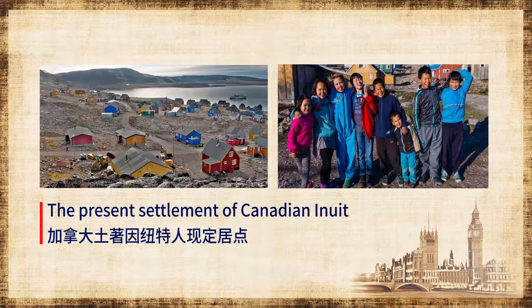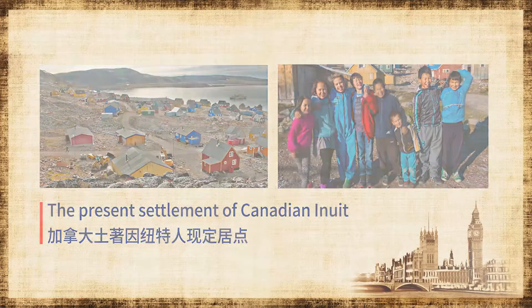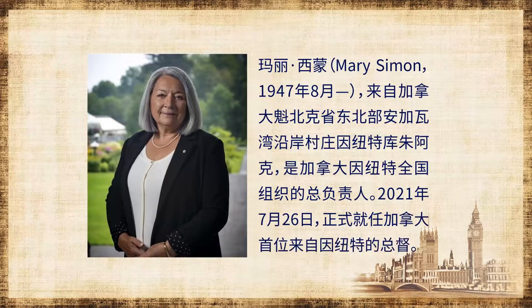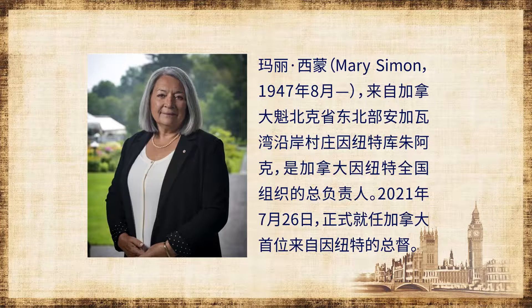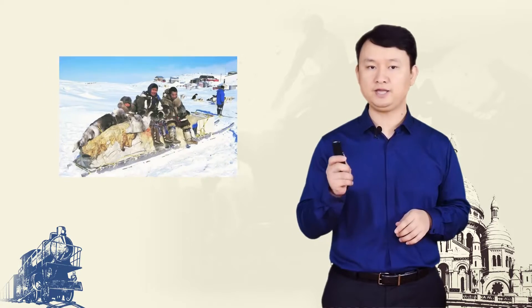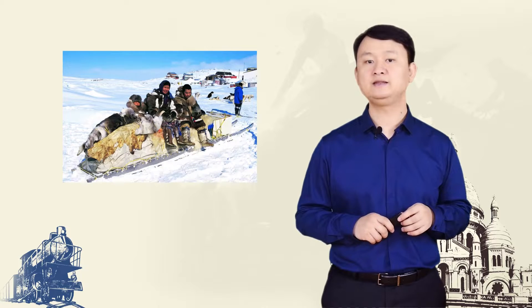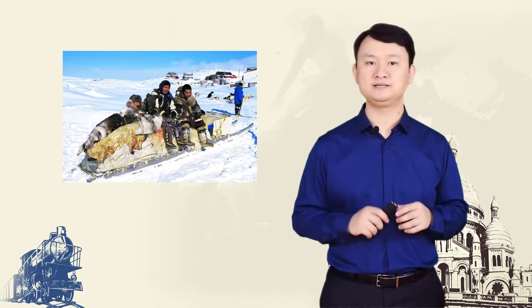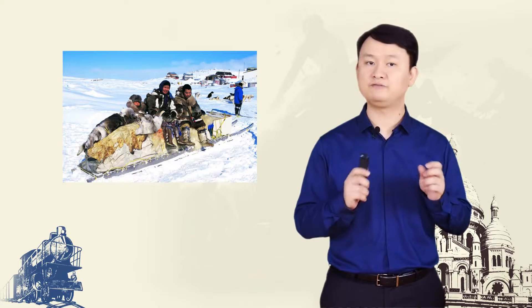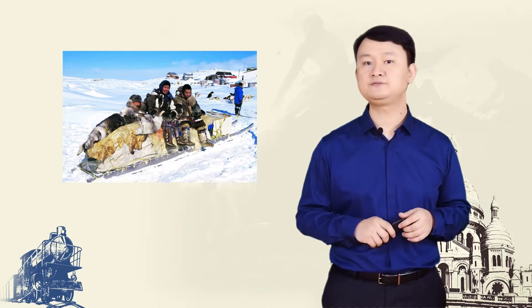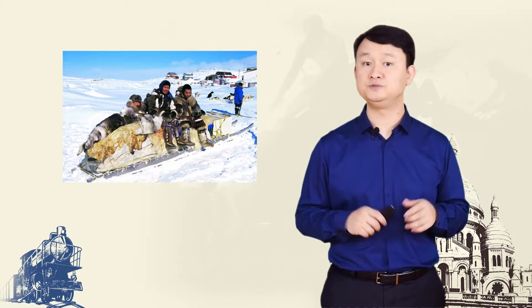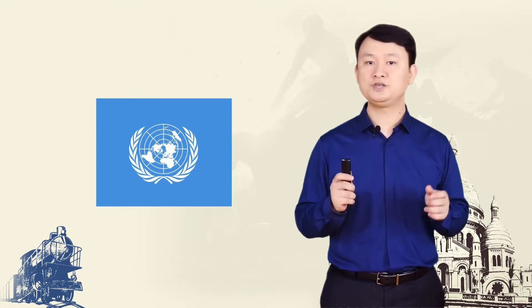They are a sector of Canadian society that remains discriminated against today. While in recent years their situation has improved and they have become more politically and economically active, Aboriginal peoples are still, as a group, Canada's poorest peoples. Their income is less than half the Canadian average, their life expectancy is 10 years lower than the Canadian average, their infant mortality rate is twice as high, and they are vulnerable to diseases. International organisations such as the United Nations have criticised the Canadian government's systematic discrimination against its native population.